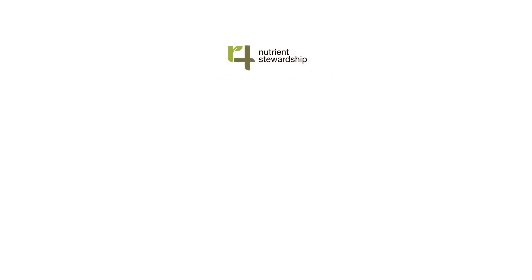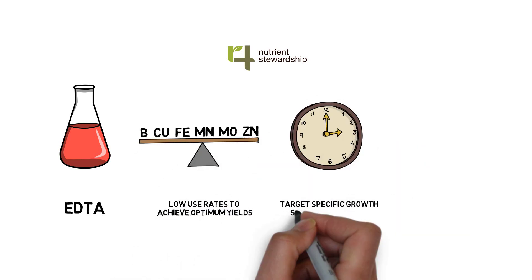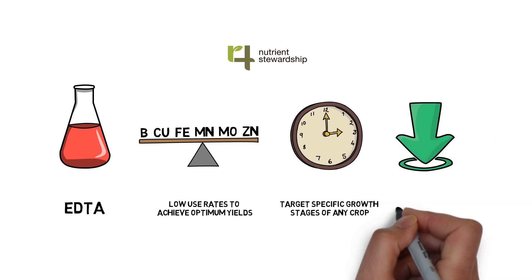Nature's CropMax is an important part of the 4R nutrient stewardship strategy: right source of micronutrients, right rate of nutrients, used at the right time, and used in the right place.